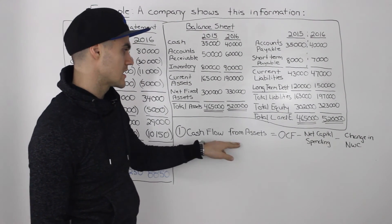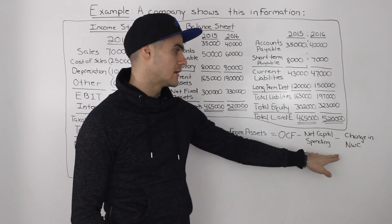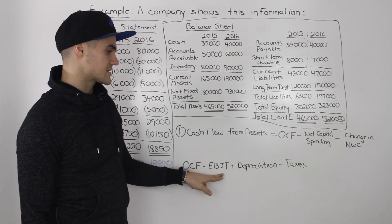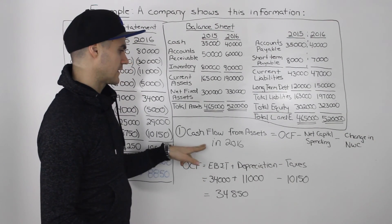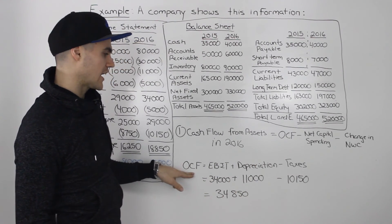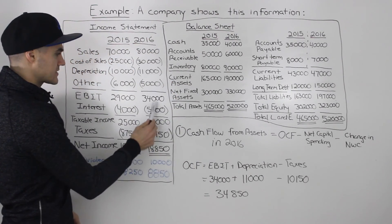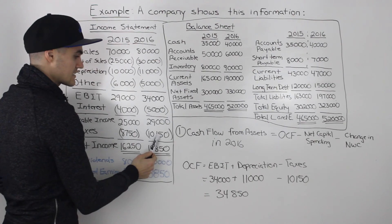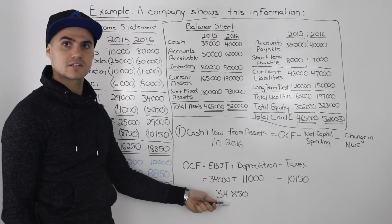So now let's find what we're actually asked to find. The first thing is cash flow from assets, which equals operating cash flow minus net capital spending minus change in net working capital. Operating cash flow equals earnings before interest and taxes plus depreciation minus taxes. Since we're finding cash flow from assets for 2016, we pull those figures from the 2016 income statement: EBIT of $34,000, depreciation of $11,000, and taxes of $10,150. That gives us total operating cash flow of $34,850 for 2016.